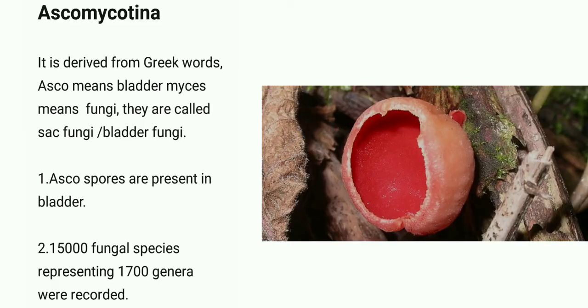In this video, we are going to learn about the Ascomycotina. Ascomycotina is derived from the Greek words: 'asco' means bladder — a flexible, bag-like structure — and 'mycota' means fungi. Ascomycotina looks like a sac or bladder; hence, they are known as sac fungi or bladder fungi. The spores present in the Ascomycotina are known as ascospores.